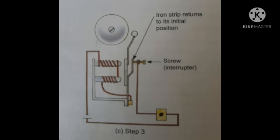Now step 3: When the soft iron strip gets attached to the electromagnet, it no longer touches the screw, and hence the circuit is broken. This turns off the electromagnet and it can no longer attract the soft iron strip.